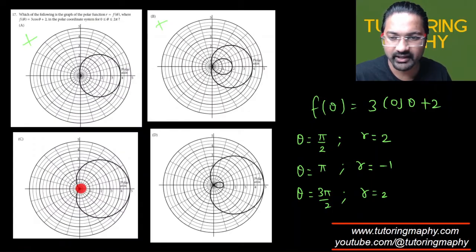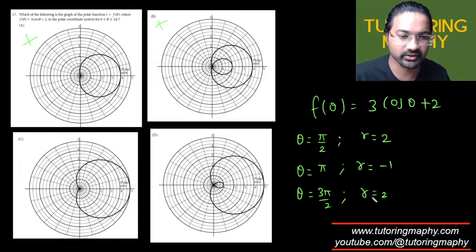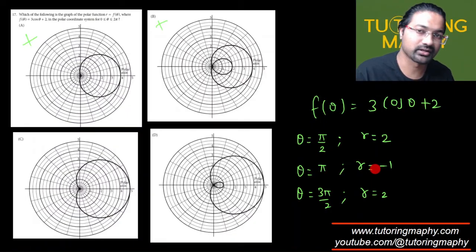What does that mean? If I am at π/2 my value is 2, which is clearly 2 over here as well and 2 over here as well. If I'm at 3π/2, I'm still at 2, which is 2 here and 2 here as well.